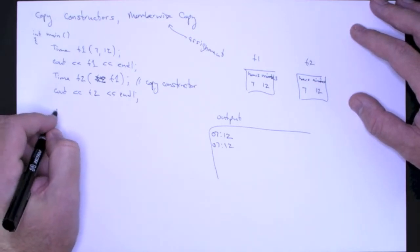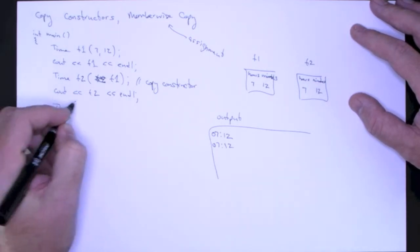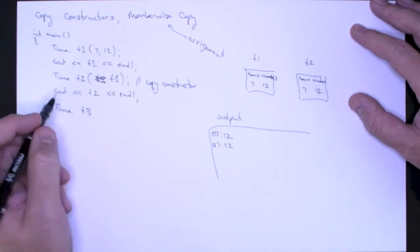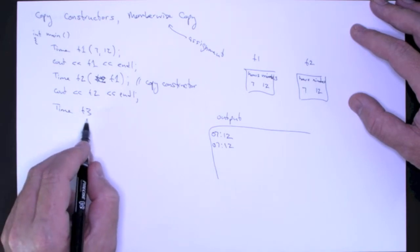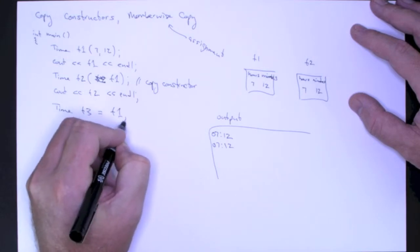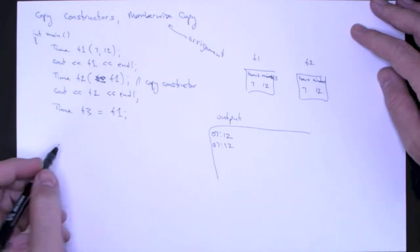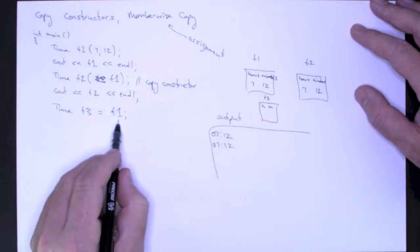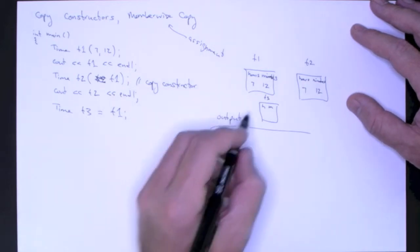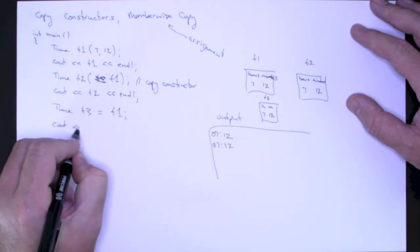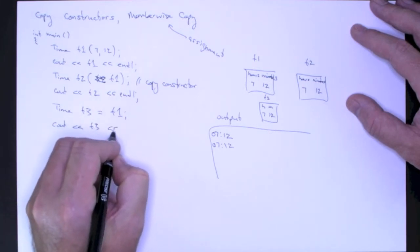Another way that you can make a copy of an object is using member-wise copy. So let's say, for example, I want to construct a new time object T3, and then I can use assignment to make a copy of T1. Again, what's going to happen is, out in memory, I'm going to get T3 with hours and minutes. It's going to copy member-wise the elements of T1 into T3, and so I get 7 and 12. If I see out T3, I'm going to see the same output.